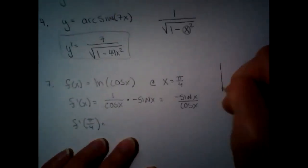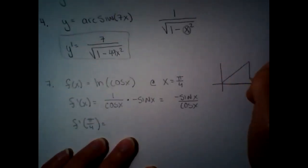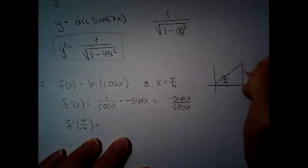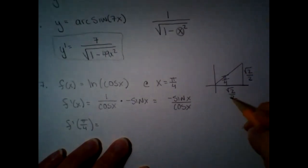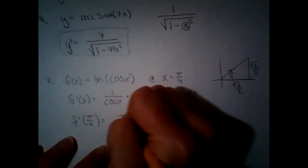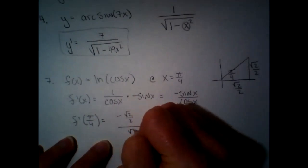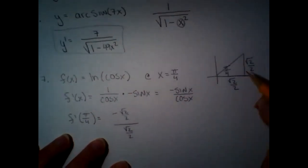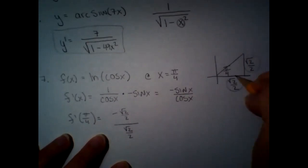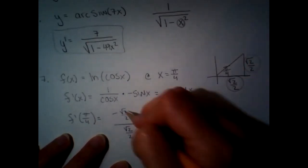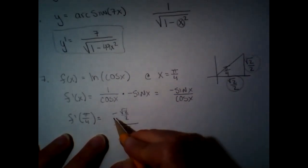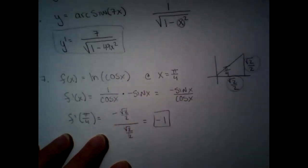We evaluate at π/4. On the unit circle, both sides of the triangle are √2/2, so sine and cosine are the same value. We get negative (√2/2) over (√2/2), and anything over itself is 1, so all that cancels out and we just have negative one as our final answer.